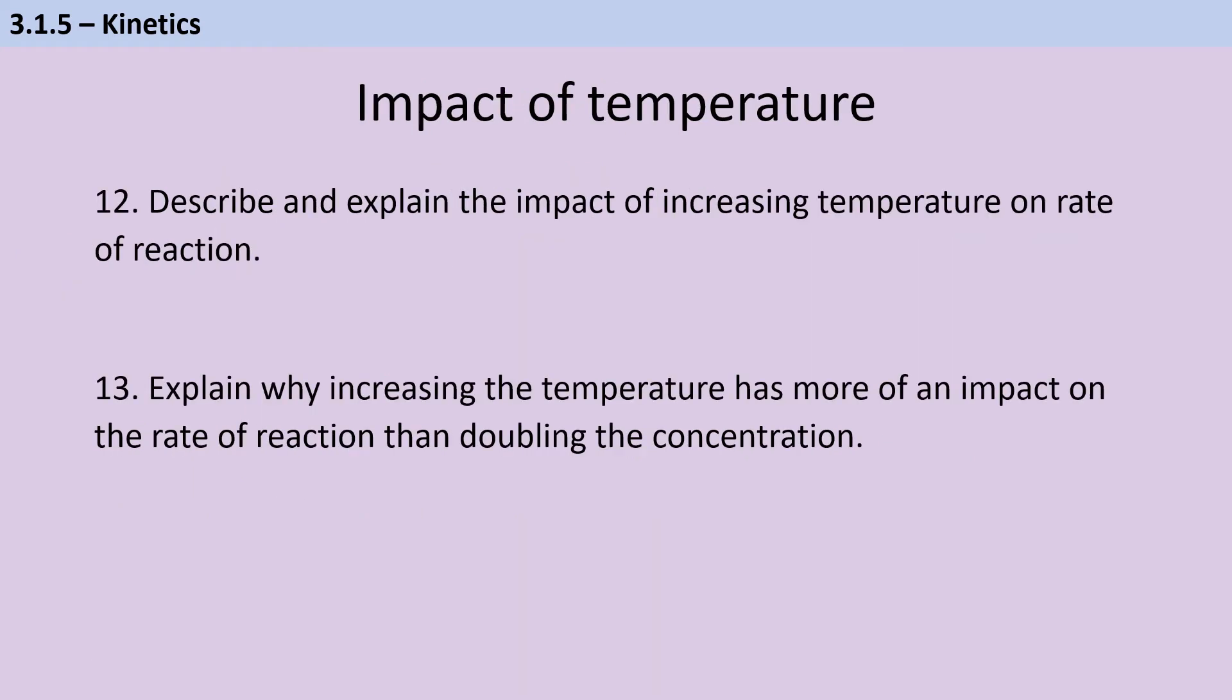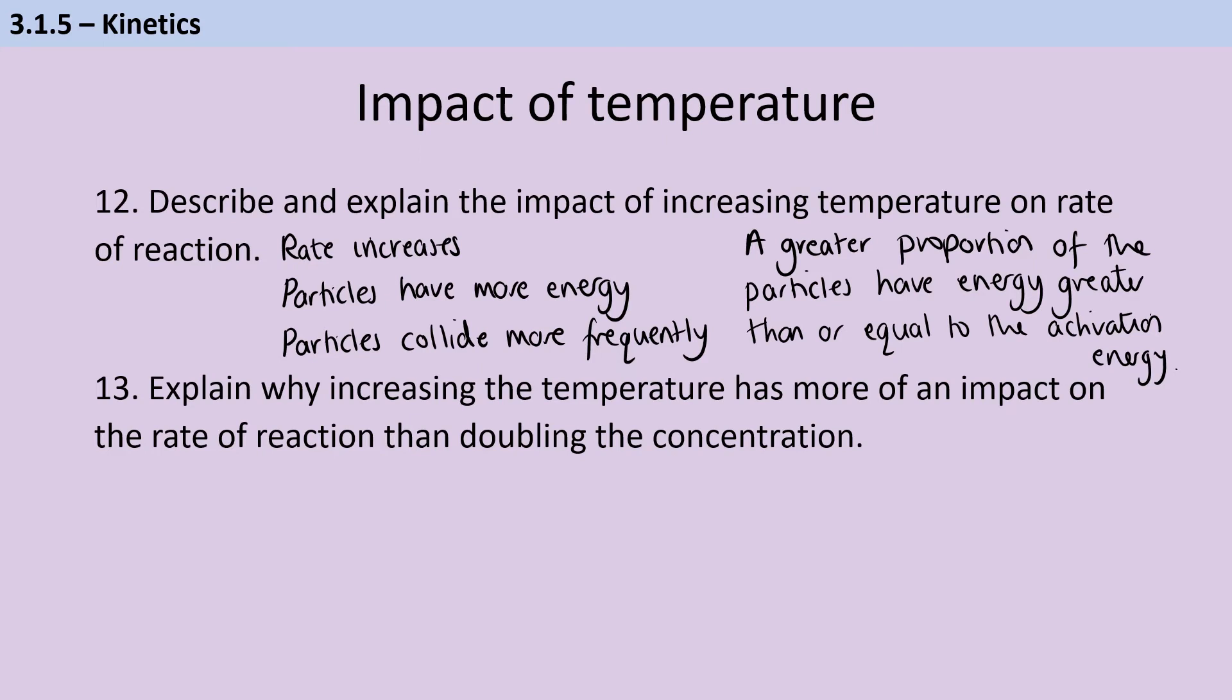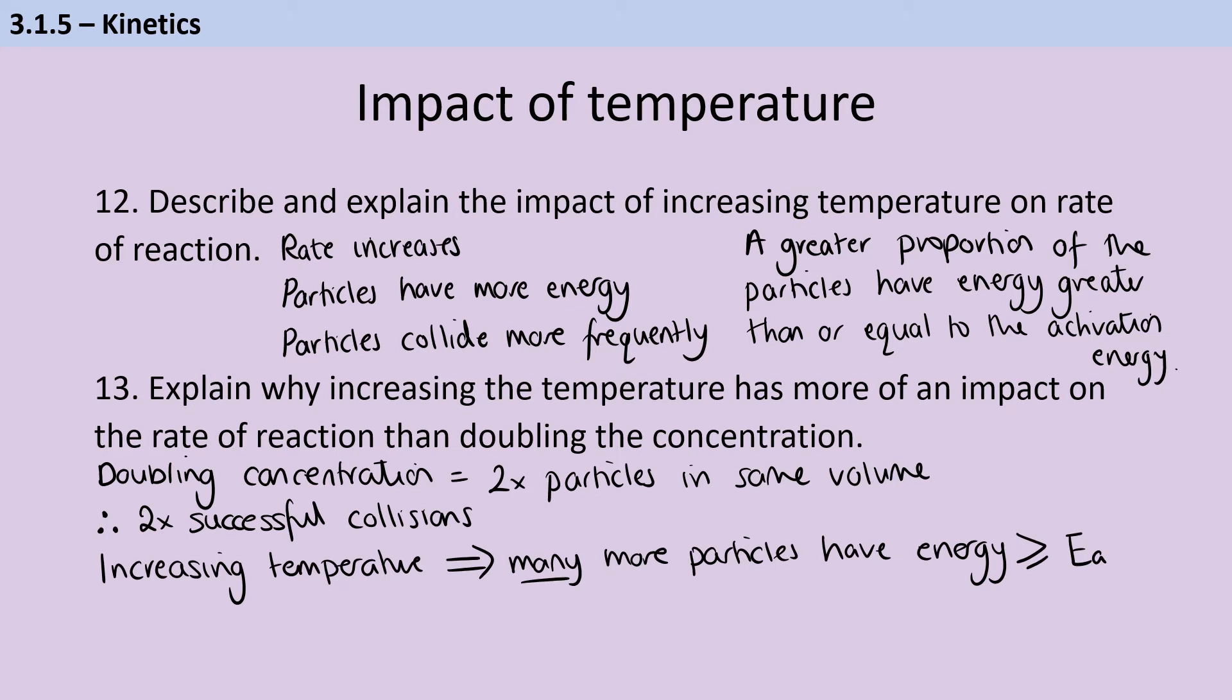As you increase the temperature of a chemical reaction, you're going to increase its rate. This is because the particles have more energy and this is going to cause two things to happen. Firstly, because they have more energy, they're moving faster and therefore the particles collide more frequently. But also far more importantly, a greater proportion of those particles are going to have energy greater than or equal to the activation energy. And that means that more of the collisions that happen will be successful collisions. Increasing the temperature is going to have more of an impact than increasing the concentration because of the number of particles that are affected. So if we double the concentration, then we double the number of particles in the same volume. And therefore, simplistically, we're also going to double the number of collisions. However, if we increase the temperature, then rather than just having twice as many particles being able to have successful collisions, we're actually going to have many, many more particles having energy that is greater than or equal to the activation energy.